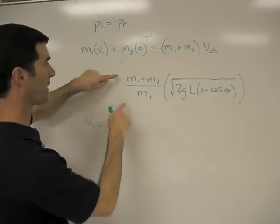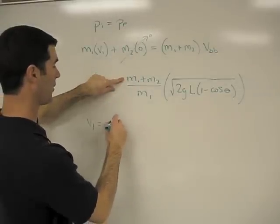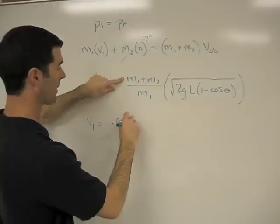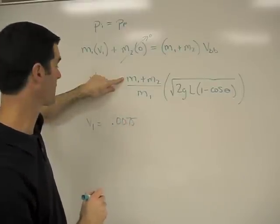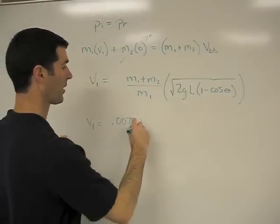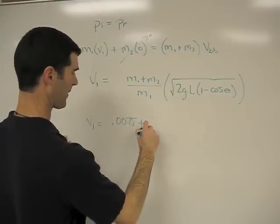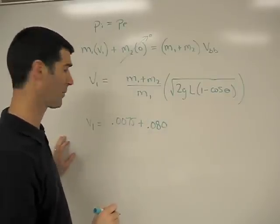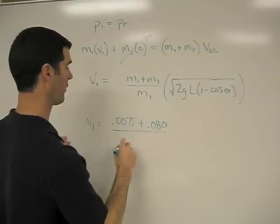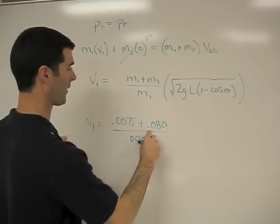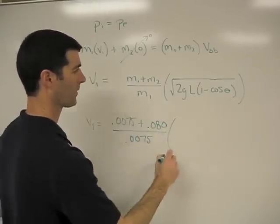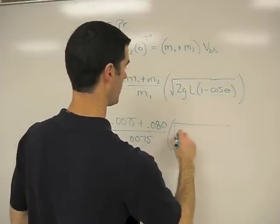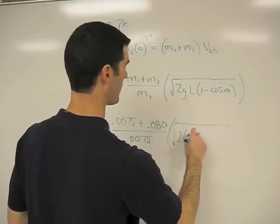So v1 is going to be m1, the mass of the ball, which was recorded at 7.5 grams or 0.0075 kilograms, plus the mass of the block was 80 grams, all over 0.0075 grams times the square root of...